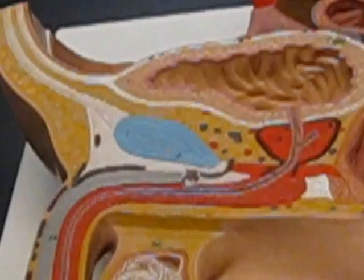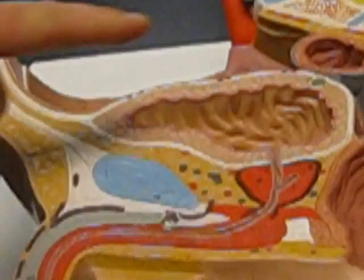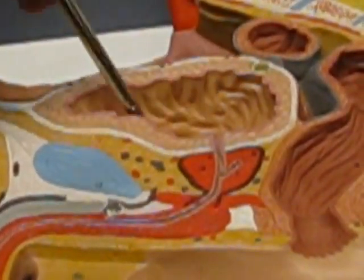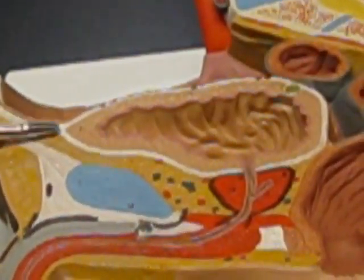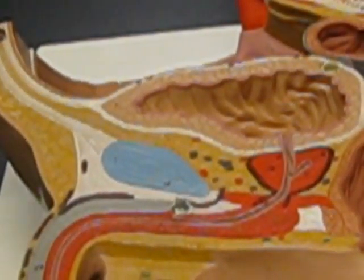I want you to be able to recognize the bladder, the seminal vesicles, the prostate from that point of view as well as this point of view where now you're looking at the interior of the bladder. You can see the rugae, you can see the detrusor muscle, you can even see the urachus. Do you see that connected to that ligament right there?